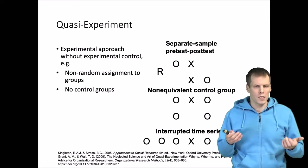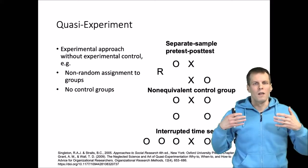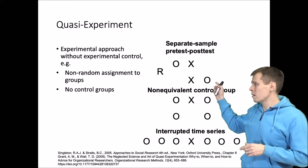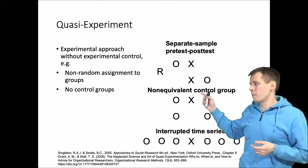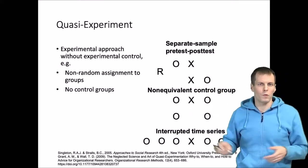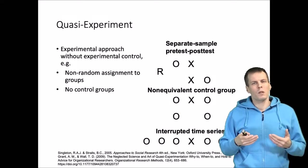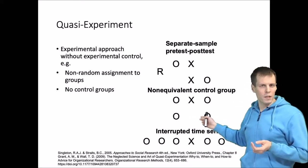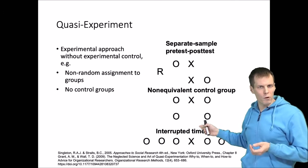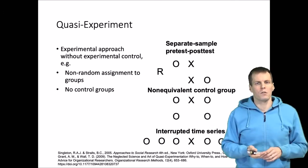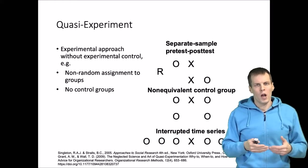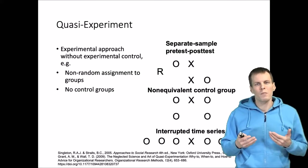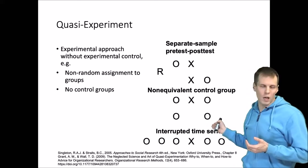We typically apply quasi-experimental designs when we are not allowed to or cannot afford to run a full experiment. It would be better to measure the outcome for both groups before and after, and even better to have a control group, but sometimes we cannot. Another option is the non-equivalent control group design, where we have pre- and post-measurement, a treatment group X, and a control group, but no randomization — perhaps due to self-selection. Whether we can make a causal claim depends on the assumptions we're willing to make.